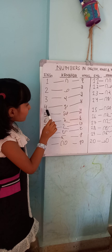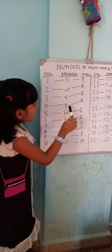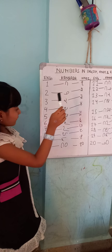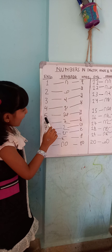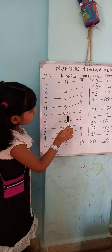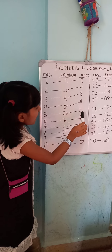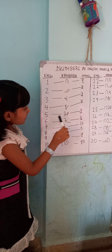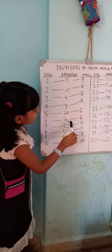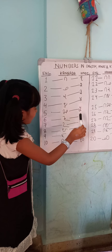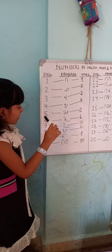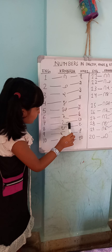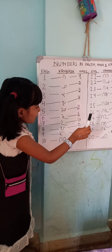4. In Kannada: Nalku. In Hindi: Chaar. 5. In Kannada: Aidu. In Hindi: Paanch. 6. In Kannada: Aaru. In Hindi: Chhe. 7. In Kannada: Eidu. In Hindi: Saat.